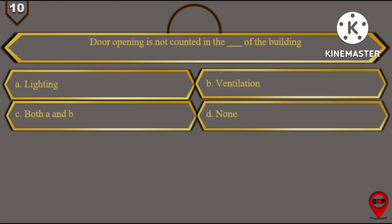And the right answer for this question is option number C, that is both A and B, Lighting and Ventilation.